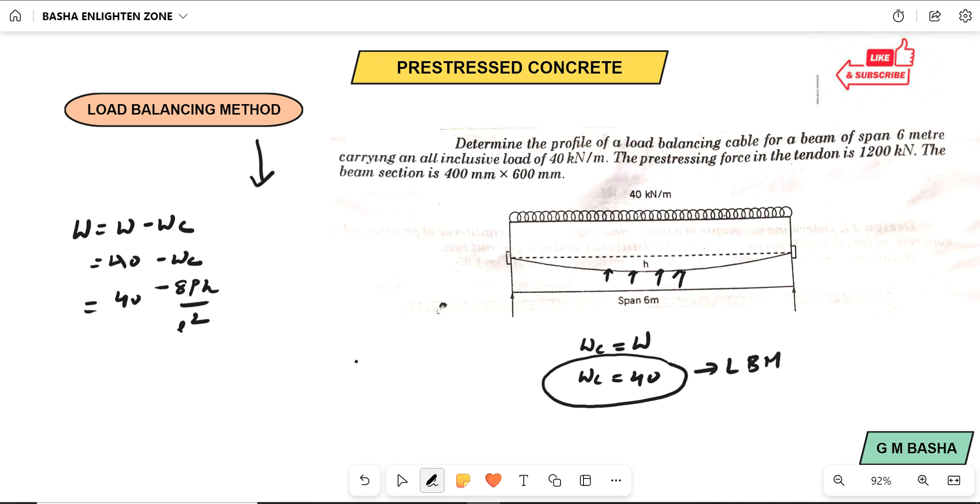We have to remember WC equal to W. The forces acting upwards will neutralize exactly the downward loading. So if this condition, what happens? We know 8pH by L square will be equal to 40.